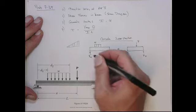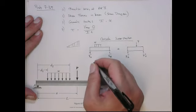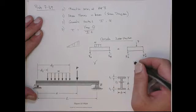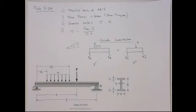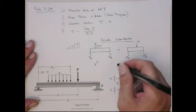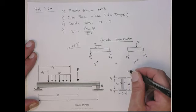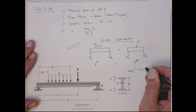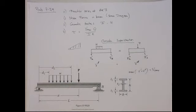We'll denote the distributed load case with a prime and the point load case with a double prime. From each case we get V prime and V double prime. We're going to add the two V's together — V prime plus V double prime — and find the maximum of that sum. That's going to be the V max we use. You could take a similar approach to computing bending stresses by integrating the shear diagram to get the bending moment diagram and finding the maximum bending moment.